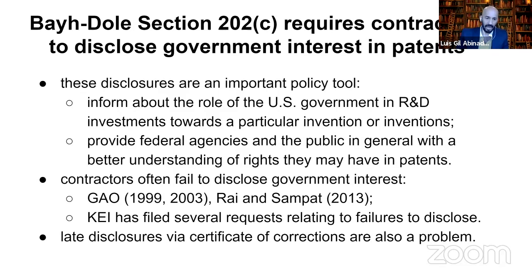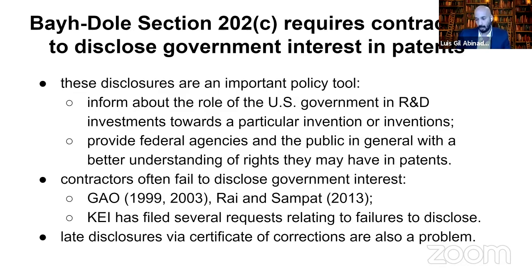It's a problem not only to never disclose government interest in patents, but it's also a problem to do this very late through Certificates of Corrections. There are two main reasons why this is a problem. Number one, it's very hard to find these patents with government interest statements in Certificates of Corrections, basically because the USPTO does not have a search keyword for patents that disclose through Certificates of Corrections. This is something that the USPTO can arguably fix, but they haven't done it yet.